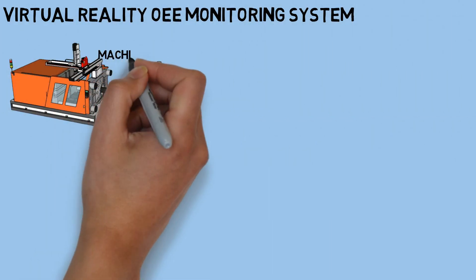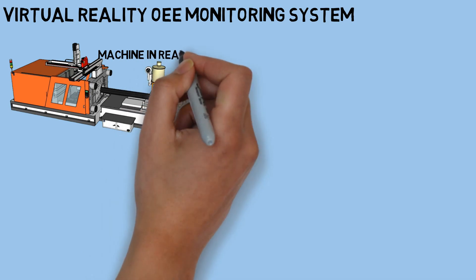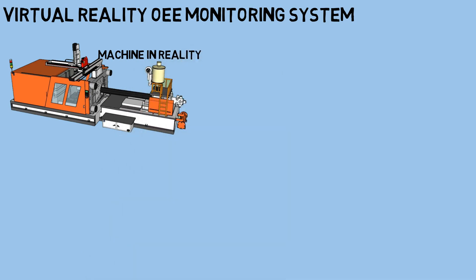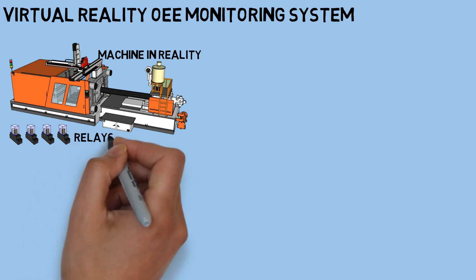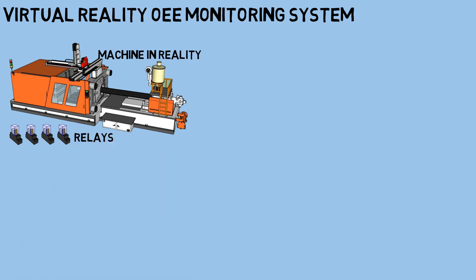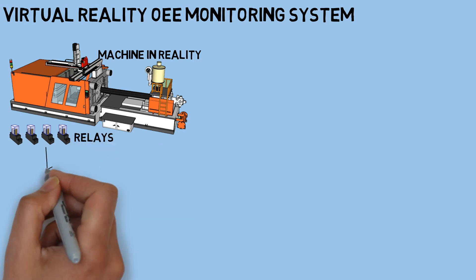We have machines in a real environment which are used on a production line, and we will measure the OEE score. We put some relays as triggers for machine condition status such as start, stop, output, and defect counter.